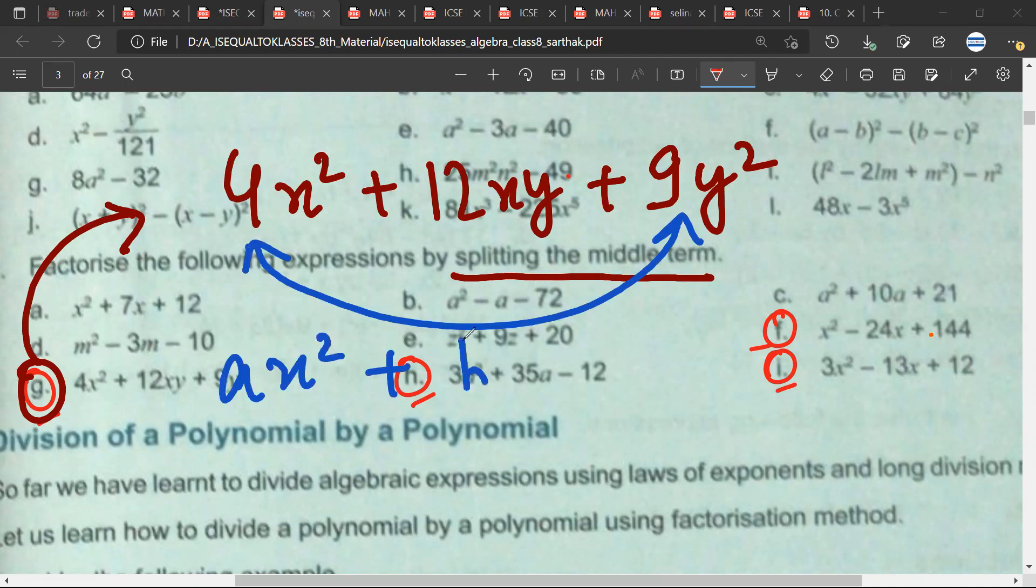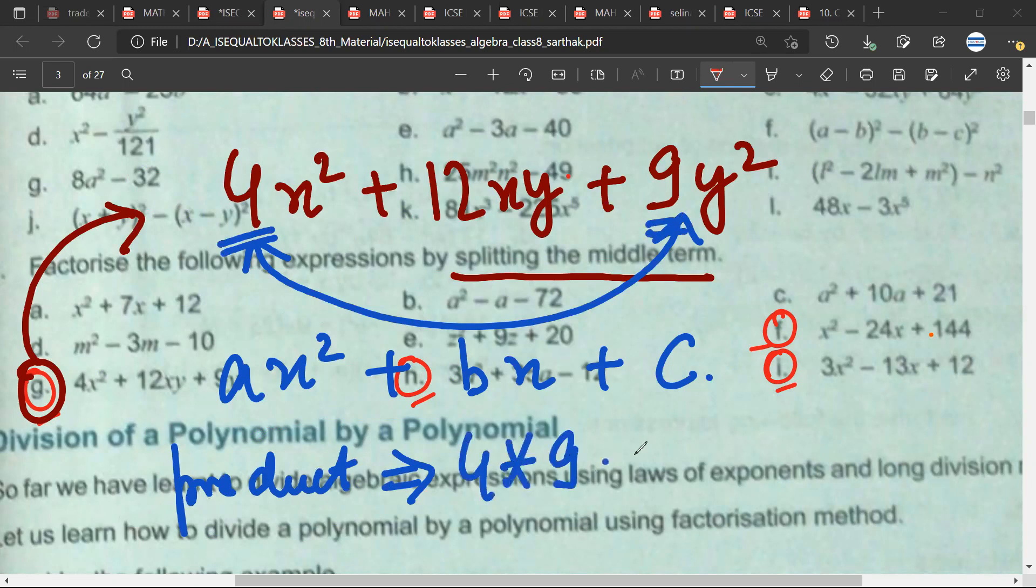Now my product, if I just look at the numbers, the coefficient, my product should be 4 into 9 is equal to 36, Mr. Sartak, are we clear? Yes. The sum of the two numbers that I'm looking for, their sum is 12.